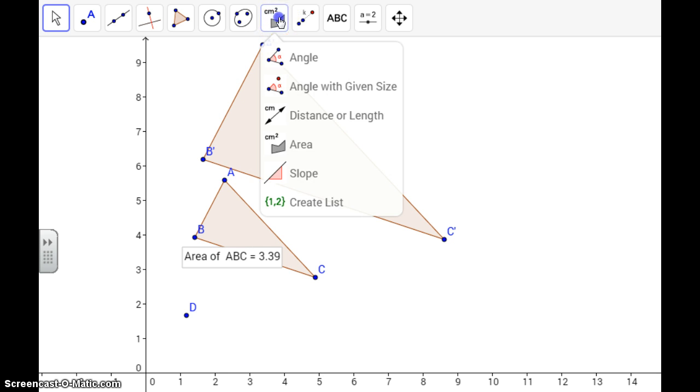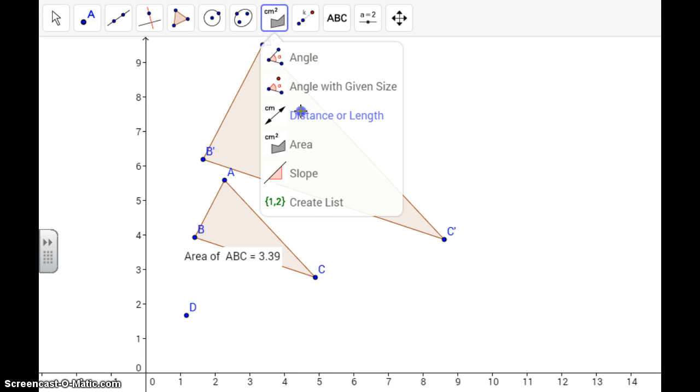Next thing, I will go over the same button as before, but this time I'm going to click distance or length. It doesn't say perimeter, but this is how we're going to find our perimeter. Again, we're going to click the pre-image, and you're going to see that the perimeter just popped up. So this is what we need.